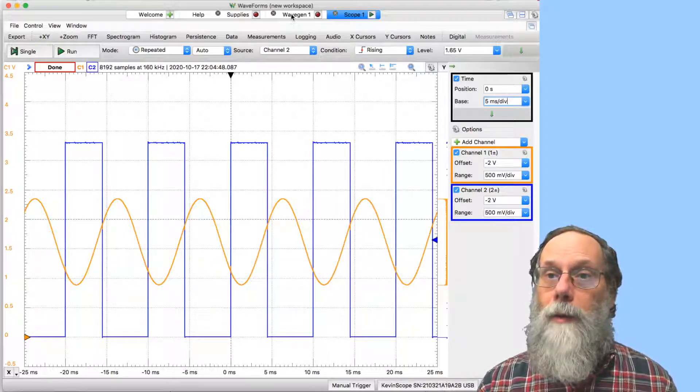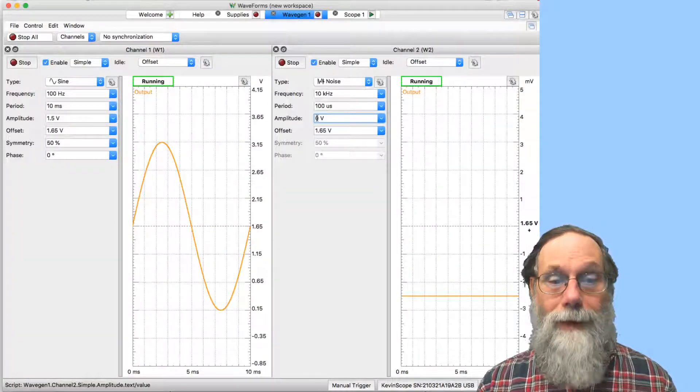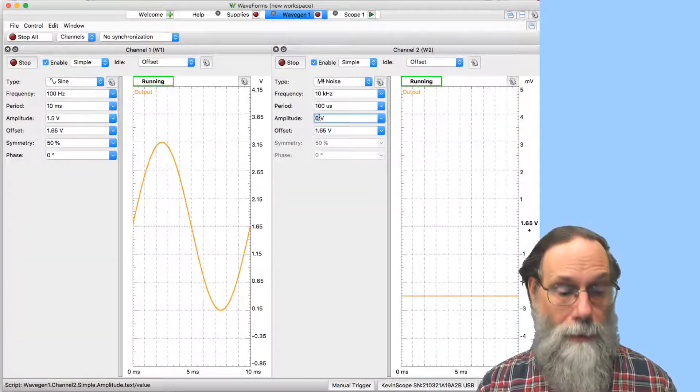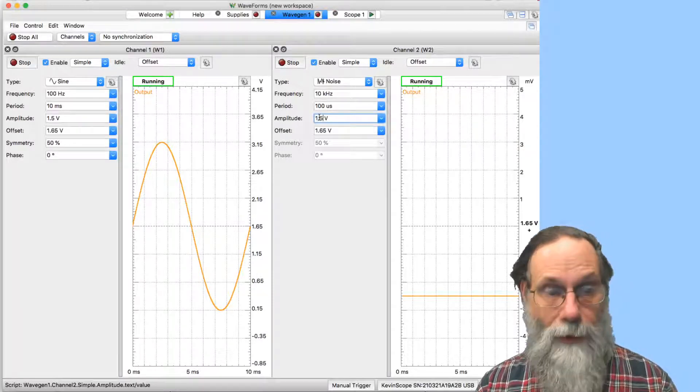Now we can go back to the waveform generator and say let's put a lot of noise on here. We can go up to maybe 1.5 volts of noise.